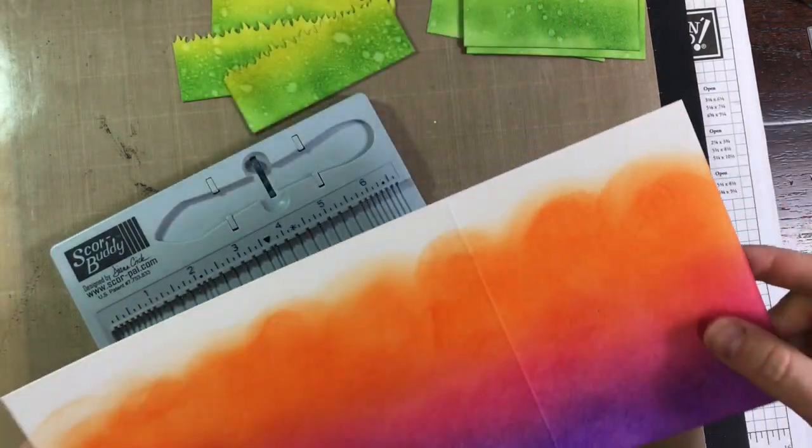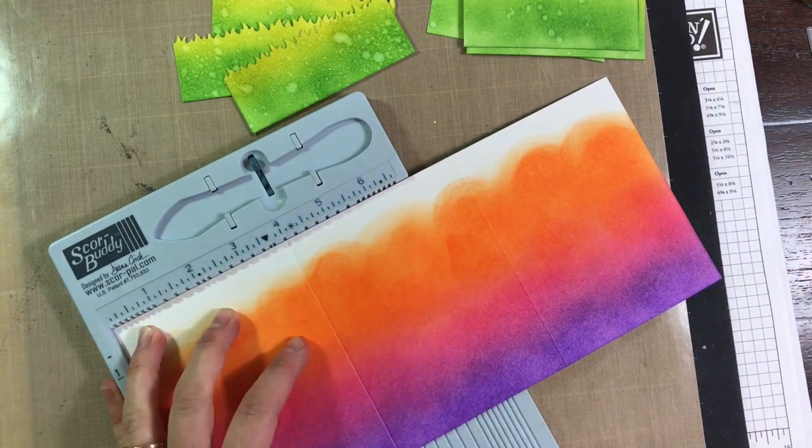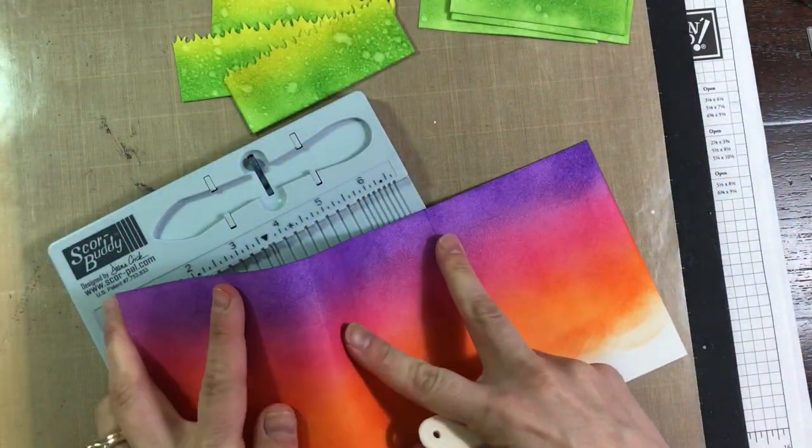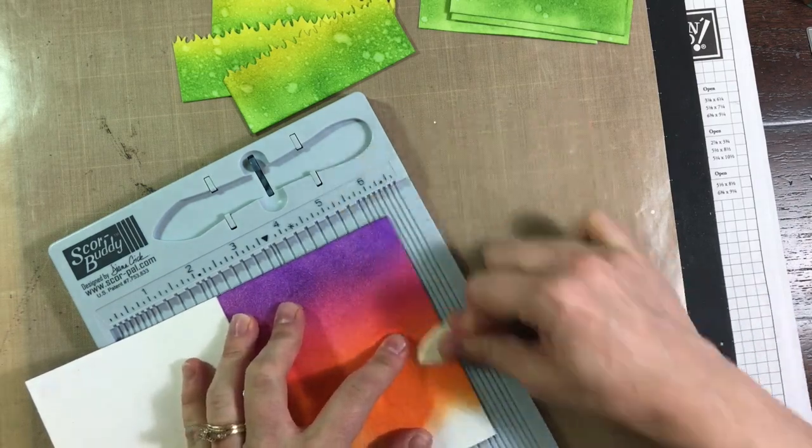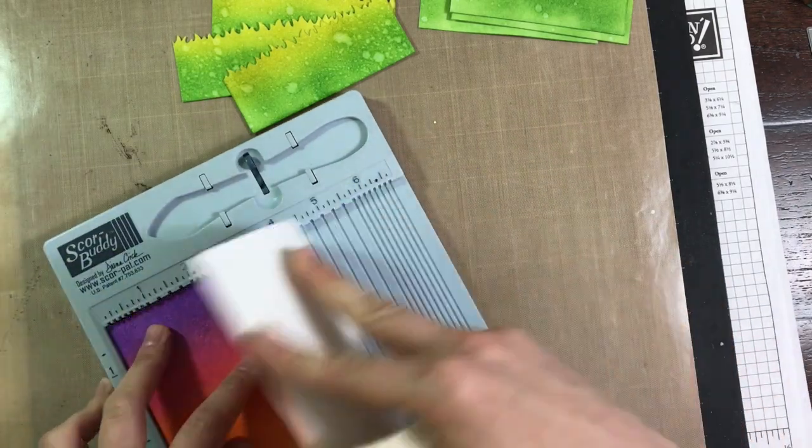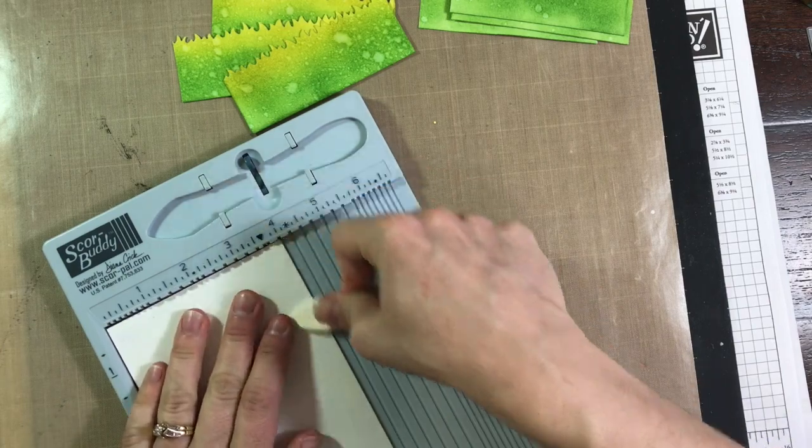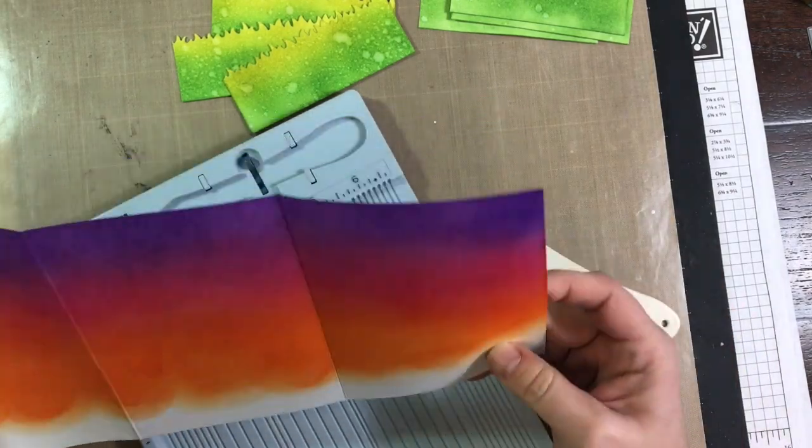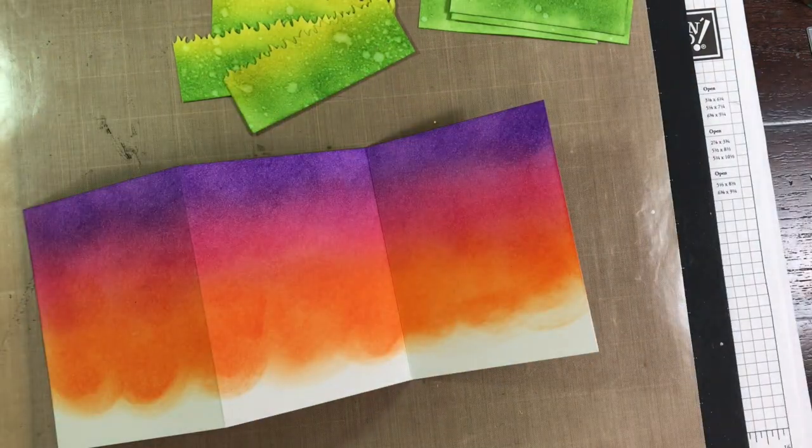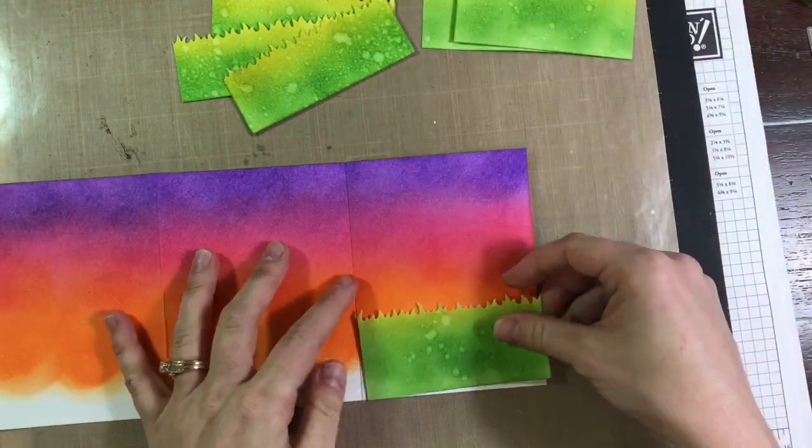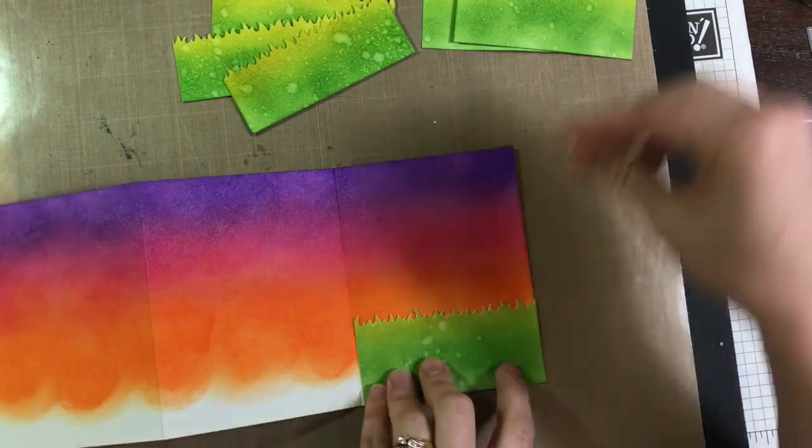Here I'm taking my bit of Bristol watercolor paper, which started out as a 9 by 12, but I cut that down to 5 1/4 by 12 inches, and that's what I did the ink blending on. And now I am scoring it at 4 inches on each side and just using my bone folder to make sure that crease is good. And that way it'll make the card itself a 5 1/4 by 4 inch card.